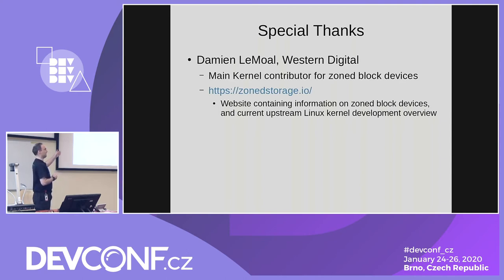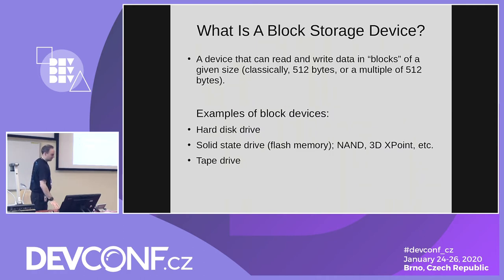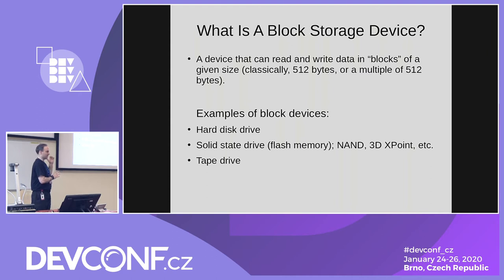Damien is primarily maintaining the zoned part of the block layer. So first, what is a block storage device? A block storage device is a device that can read and write data in blocks of a given size, typically 512 bytes or some multiple of 512 bytes, preferably in a power of 2 — 4 kilobytes and so on.